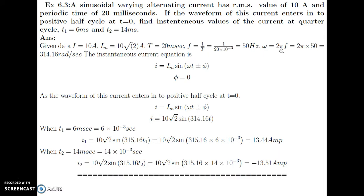Omega equals 2π into 50, which is 314.16 radian per second. The instantaneous current is given by I equals Im sin(ωt ± φ). Since the waveform enters the positive half cycle at T equal to 0, φ equals 0. So I equals 10√2 sin(314.16t). At T1 equal to 6 milliseconds, substituting gives I1 equals 13.44 ampere.